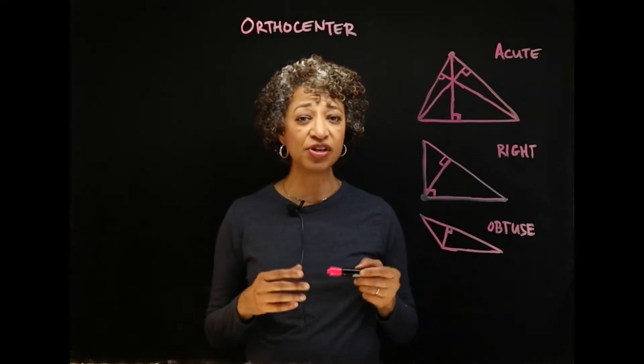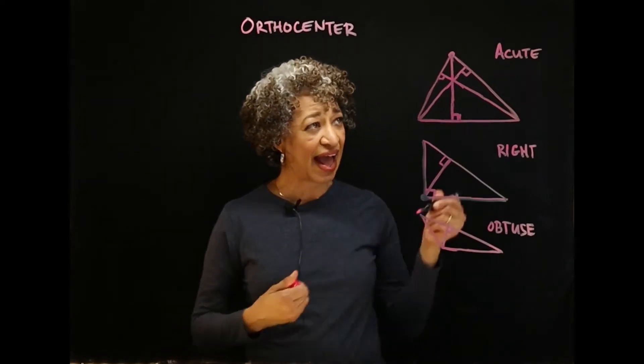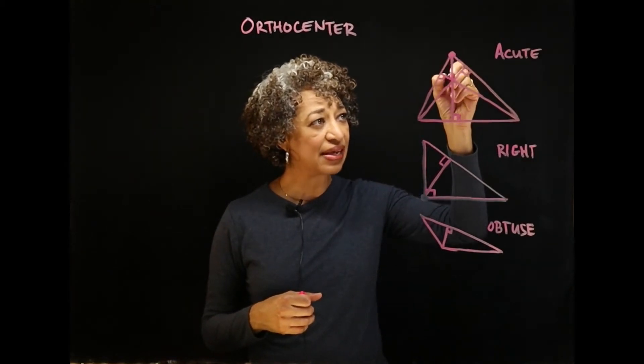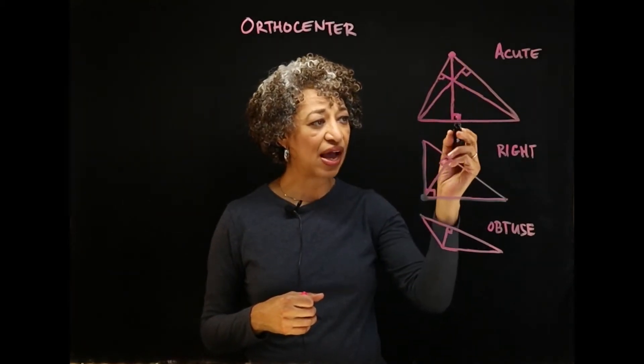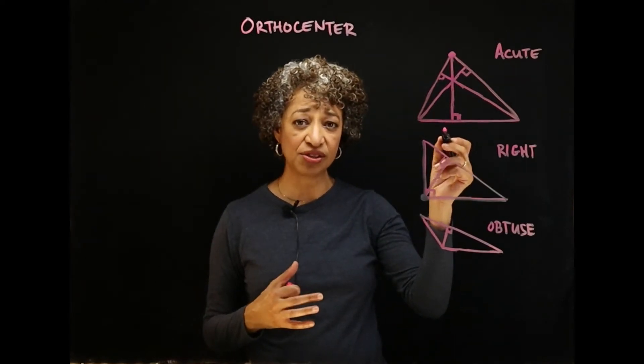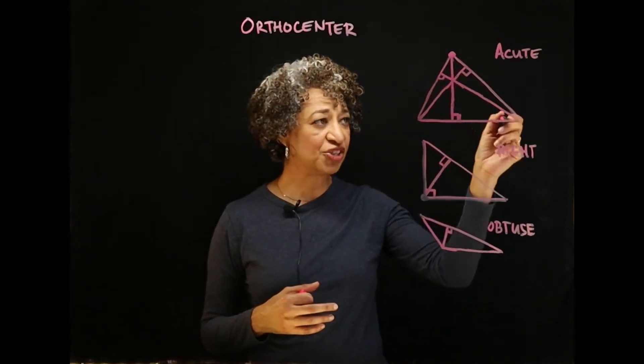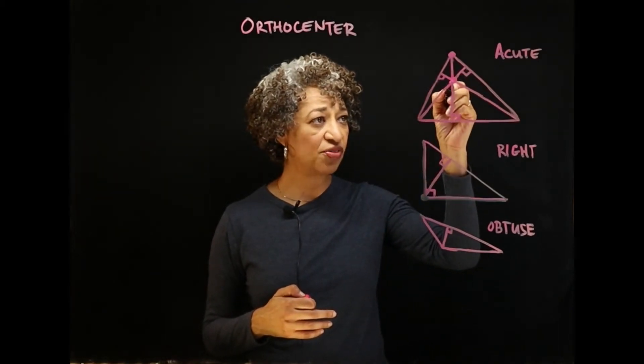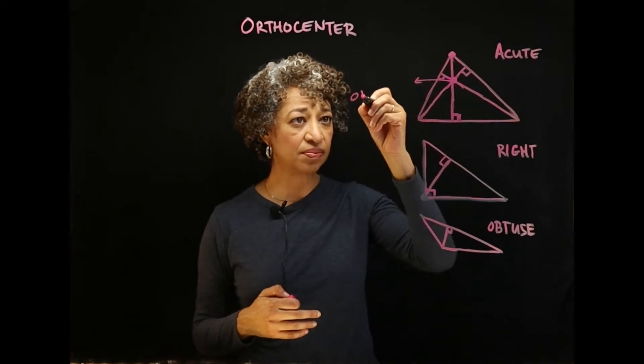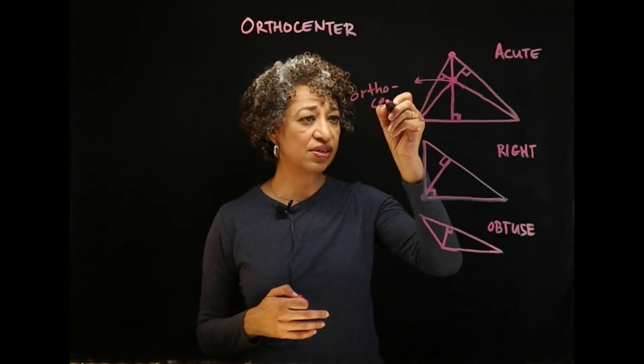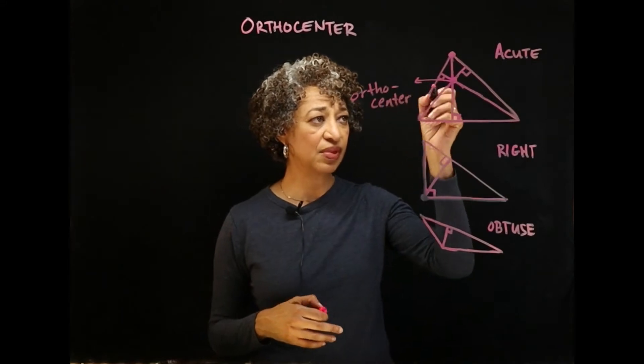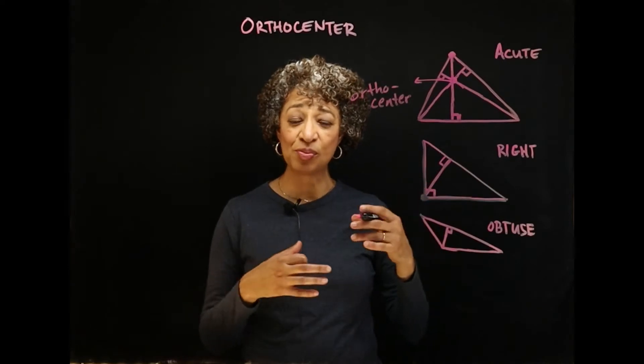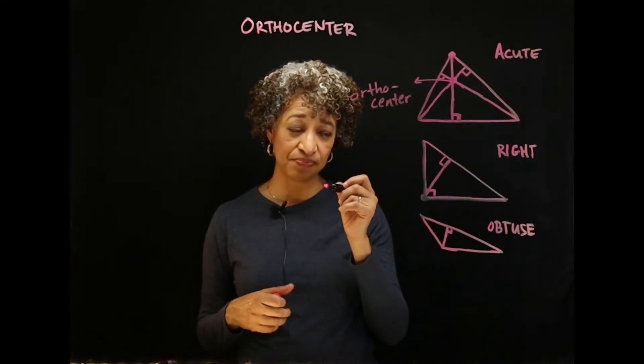The orthocenter is the point of concurrency of the three altitudes of a triangle. An altitude runs from a vertex and makes a right angle with the opposite side of the triangle. So if we sketch in all three altitudes, their point of intersection is called the orthocenter. It is a point of concurrency where three or more lines meet at a single point.